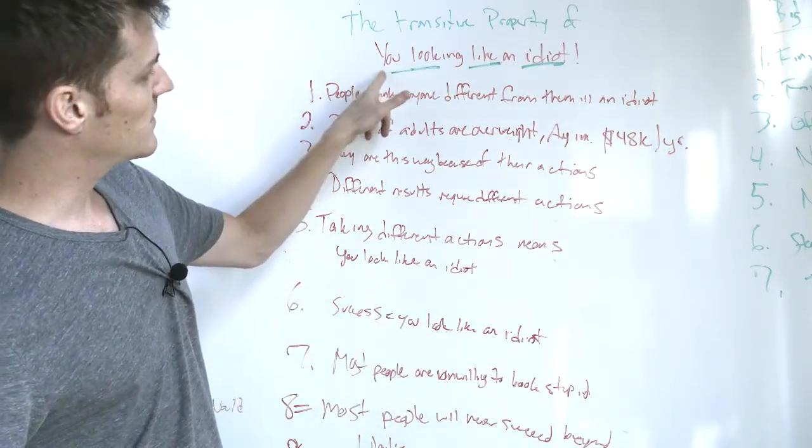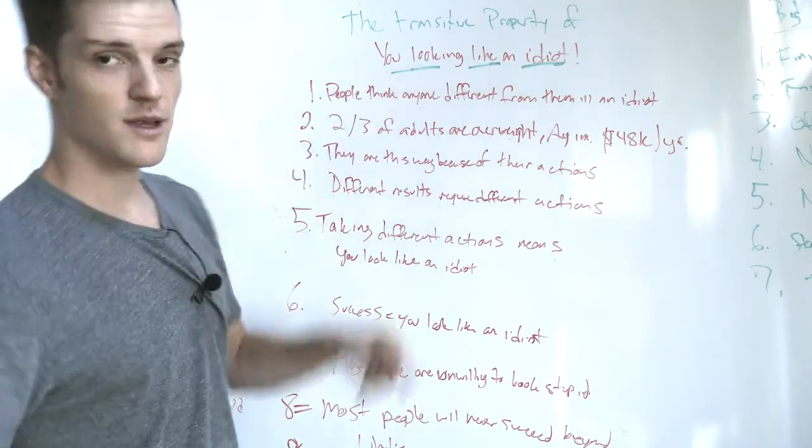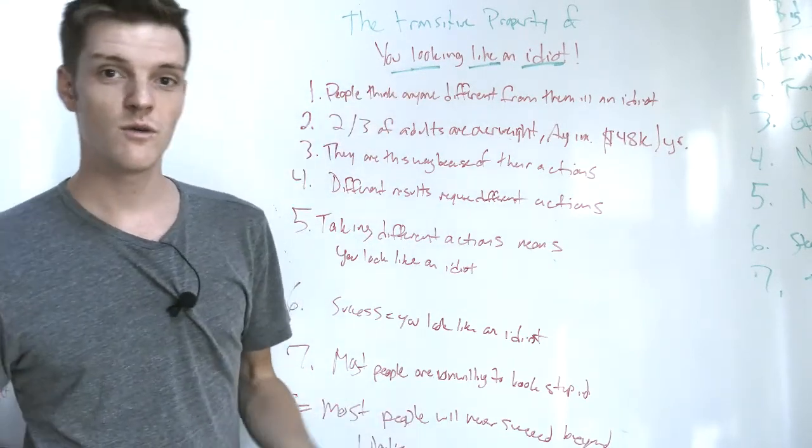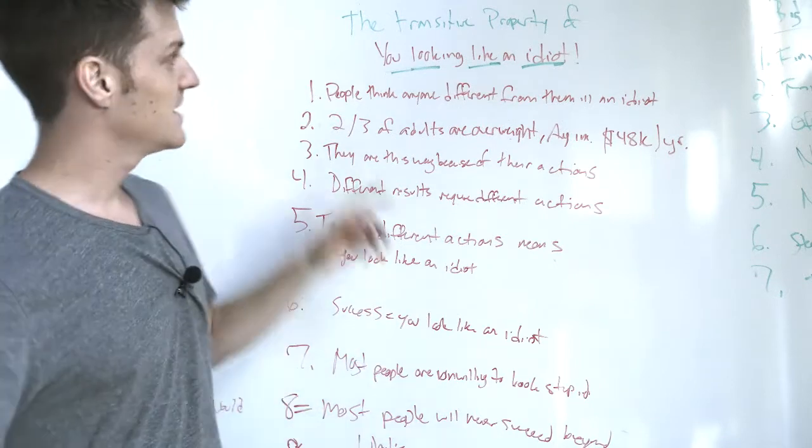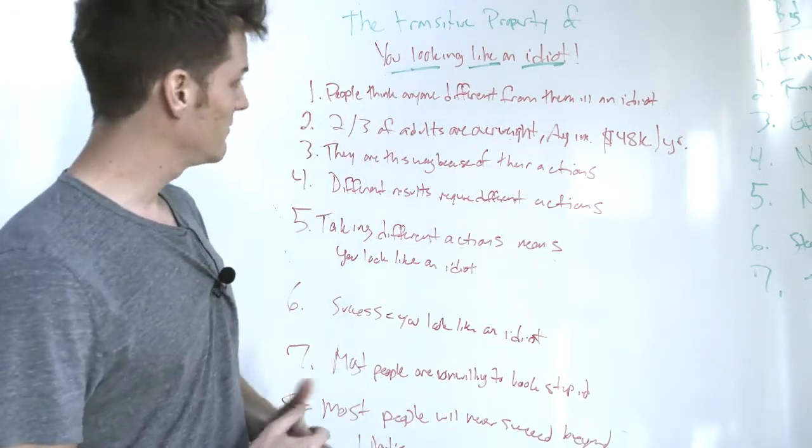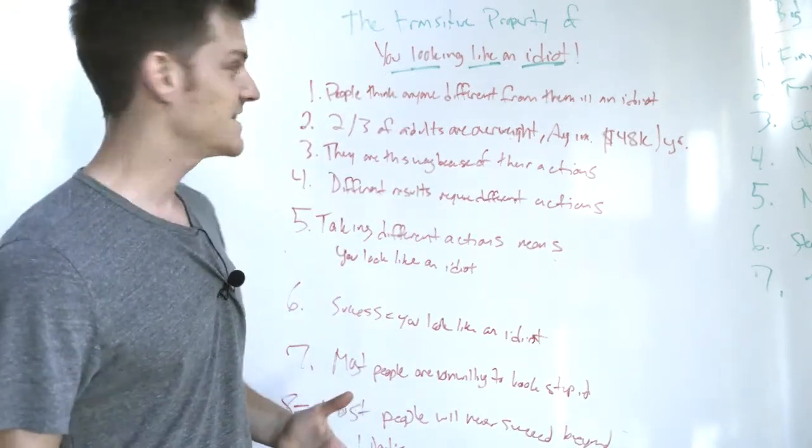And I've noticed that this actually works really well, just stopping caring what people think and worrying about the task at hand. But most people are completely unwilling to do this, and this is what stands in between where they are now and where they want to go in life or their business. That's because there's this phenomenon where if you aggressively pursue your goals, you will look like an idiot. Hence, the transitive property of you looking like an idiot.